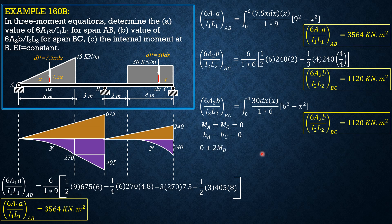Then, moment at A is 0 plus 2 times MB quantity 9 plus 6 plus MC 0 plus 6 area 1A over L1 which is 3564 plus 6 area 2B over L2 which is 1120 equals 6EI quantity HA over L1 plus HC over L2 which is 0.